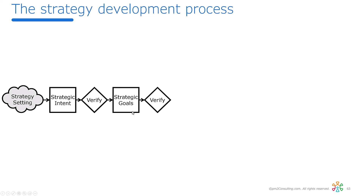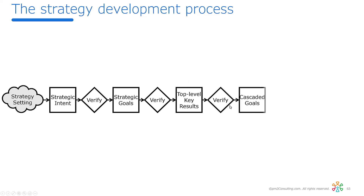Again, verify — if we do these goals, do we get the intent? If that's yes, then the next step is the top-level key results, like corporate level. Verify: if we achieve these key results, does that mean we achieve these goals? If yes, then we cascade down to departments, products, regions, whatever.